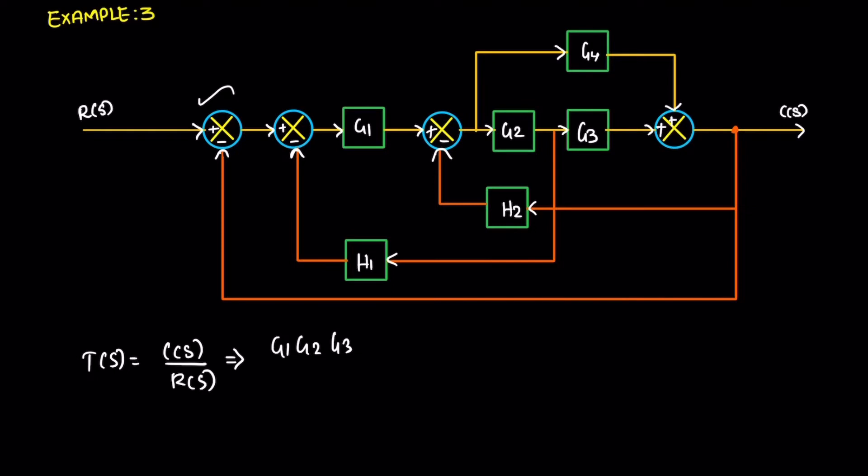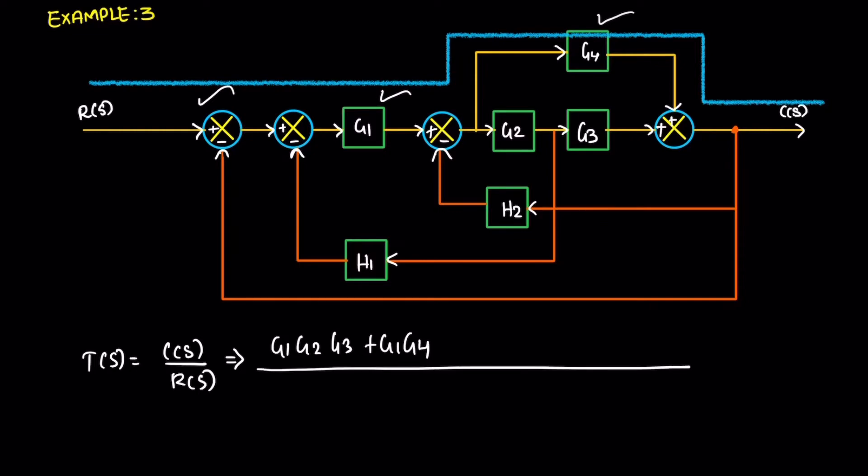Next, path 2. The path gain is the product of G1 and G4. Then the numerator part is over. We move to feedback.